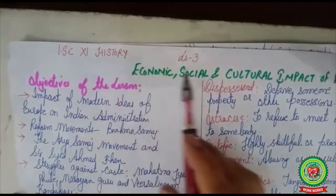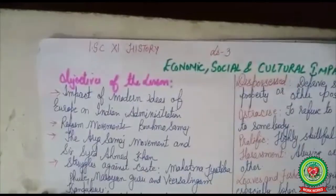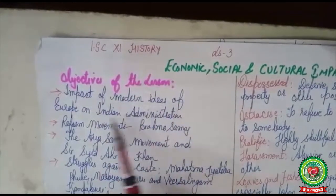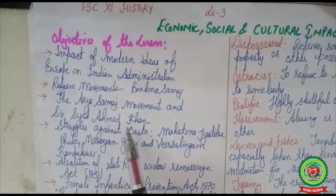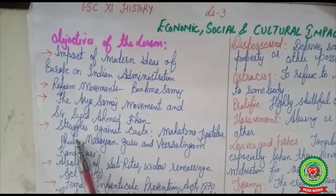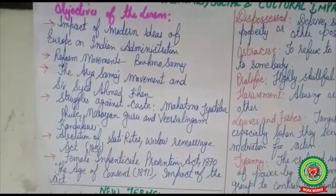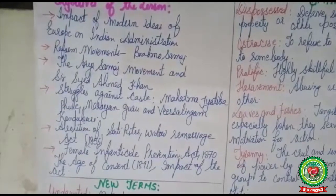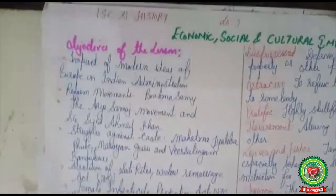Welcome to ISE Plus One History class. We are going to continue with Lesson Three: Economic, Social and Cultural Impact of British Rule. The objectives of the lesson include: impact of modern ideas of Europe on Indian administration, reform movements like Brahmo Samaj, the Arya Samaj movement, Syed Ahmad Khan's struggle against caste, and topics like abolition of sati, widow remarriage act 1856, female infanticide prevention act 1870, and the age of consent bill 1891.